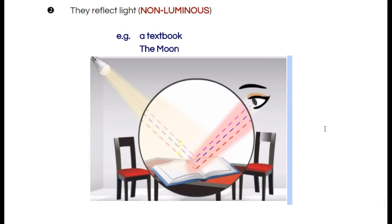So again, an object is either giving off its own light, in which case you see it directly, or an object is not giving off its own light. It's reflecting any light from another light source back into your eyes so that your nervous system can process it. Most objects are non-luminous.